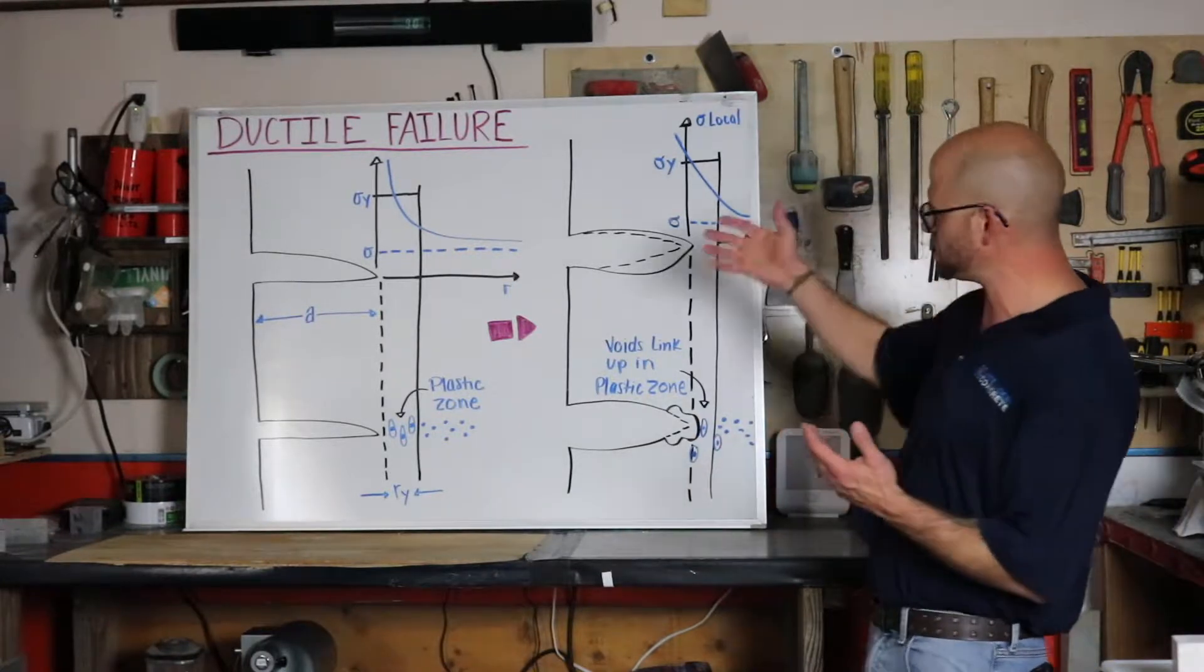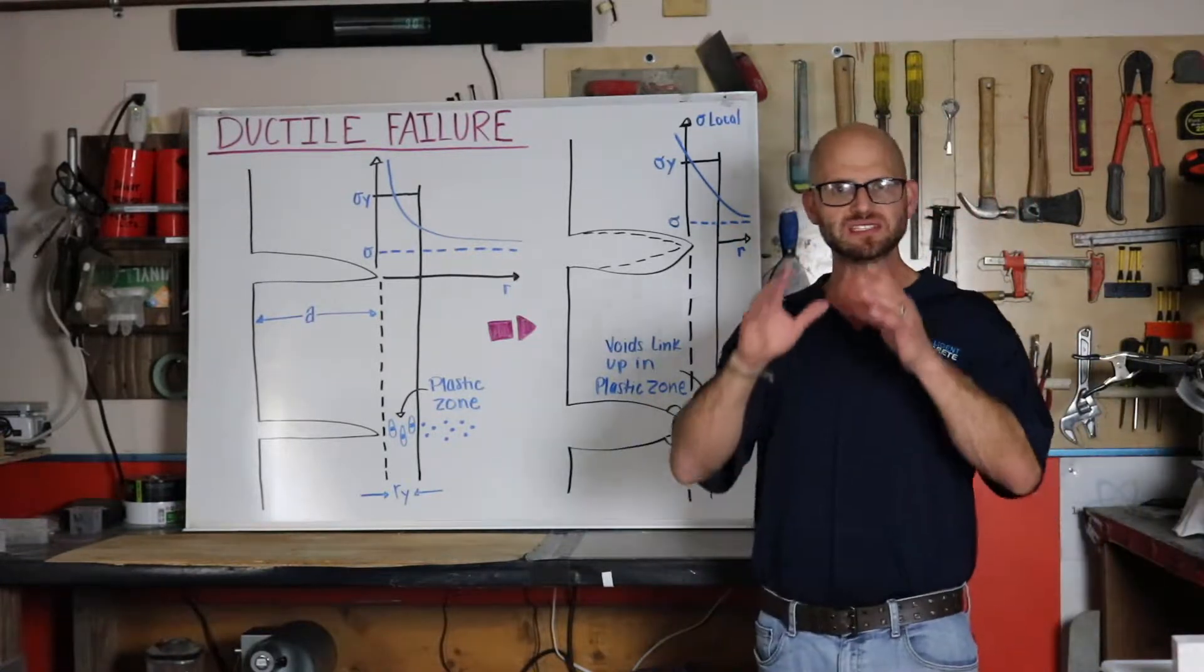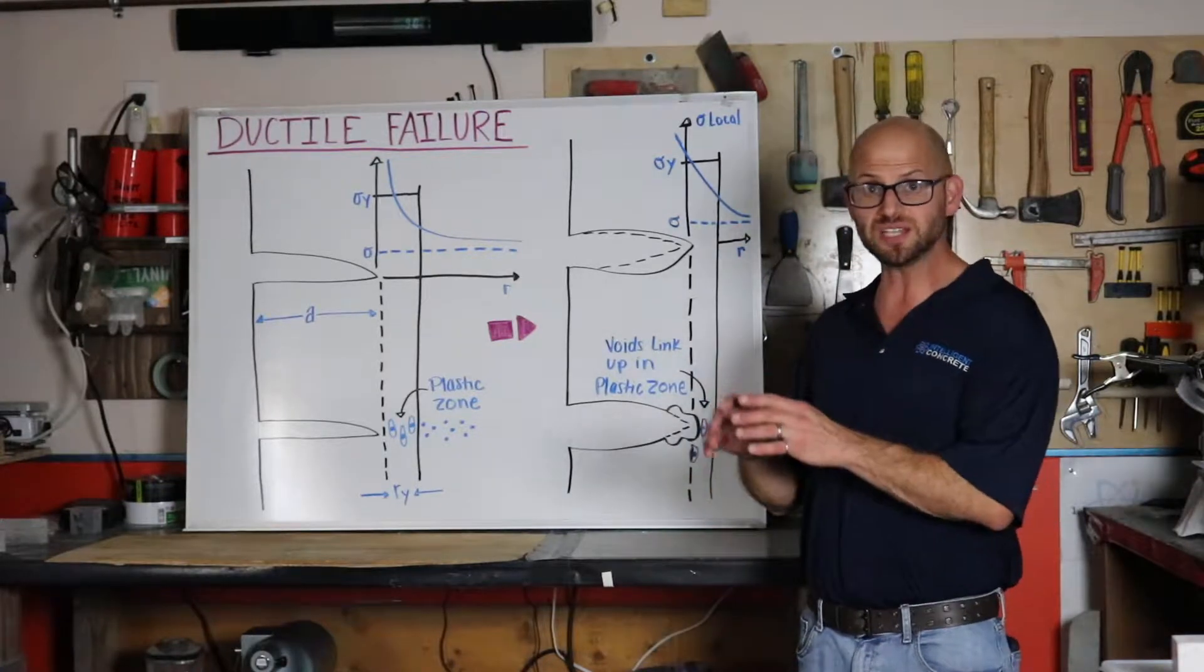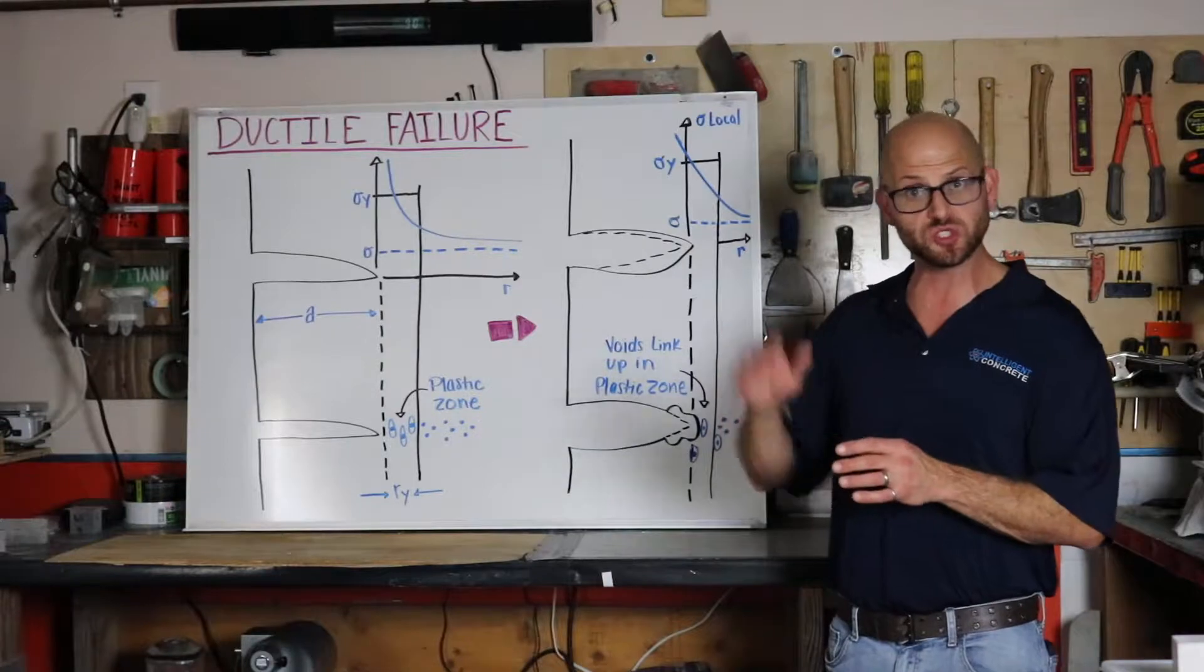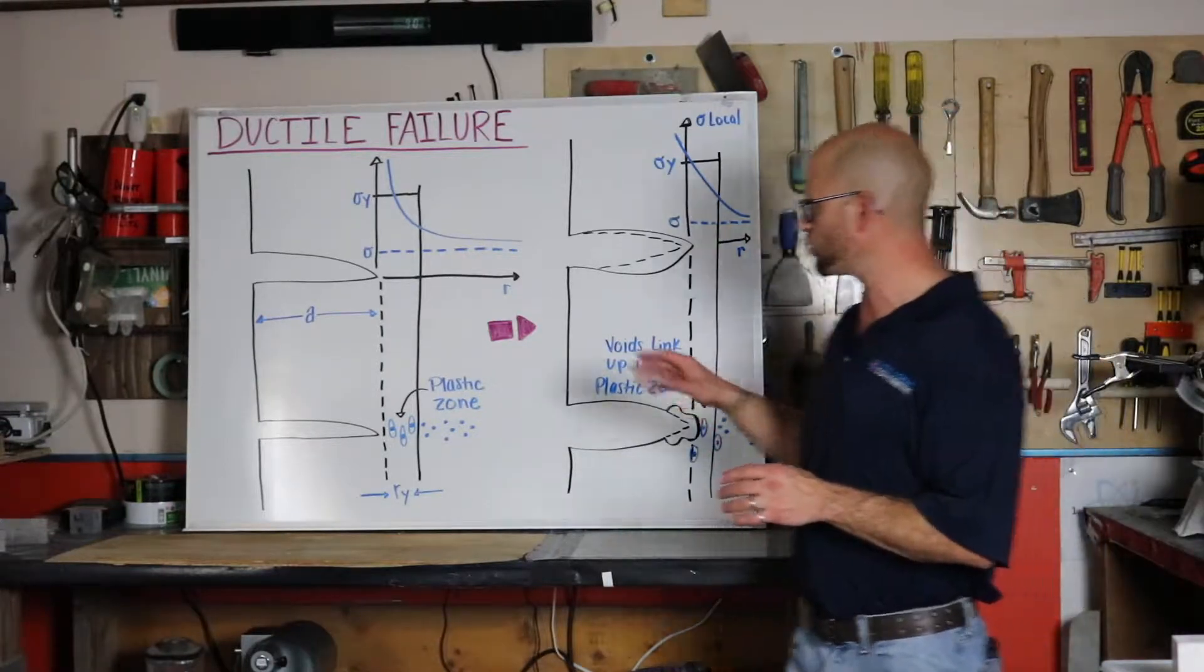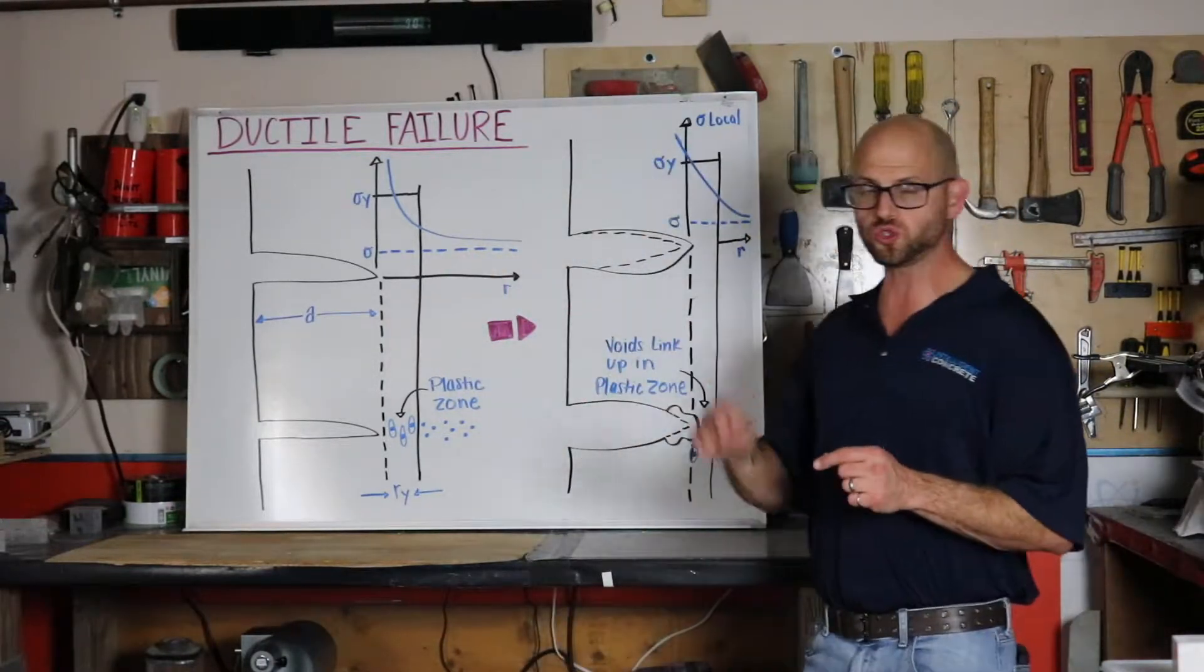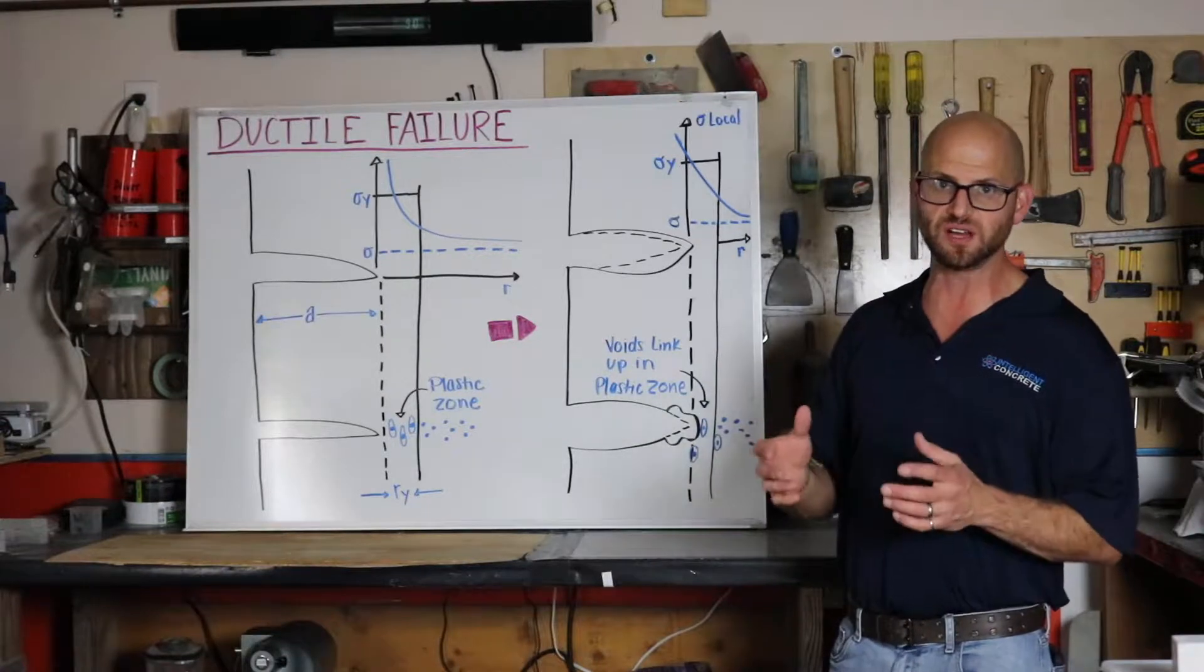If we look at the equation, which isn't up here anymore, it's the applied stress plus another factor of this applied stress times the square root of our crack length over two times our radius of our crack.